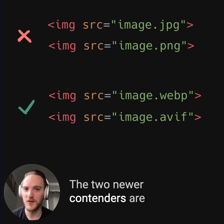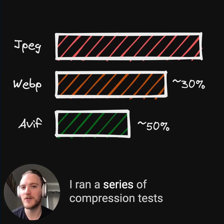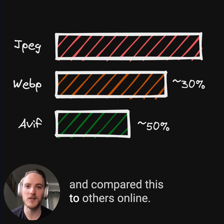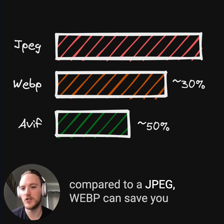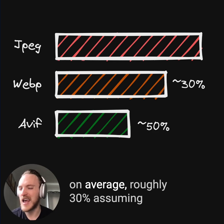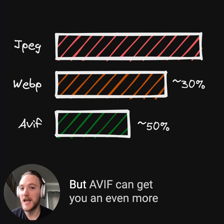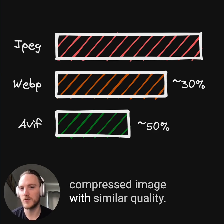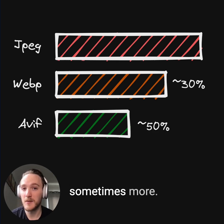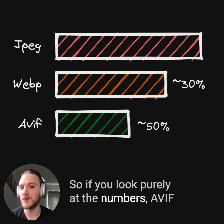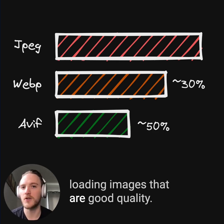The two newer contenders are WebP and AVIF. But which one is better? I ran a series of compression tests and compared this to others online, and it seems clear that, generally speaking, compared to a JPEG, WebP can save you on average roughly 30%, assuming we're good with lossy compression. But AVIF can get you an even more compressed image with similar quality, reaching up to around 50% and sometimes more. So if you look purely at the numbers, AVIF looks to be the most optimized for fast loading images that are good quality.